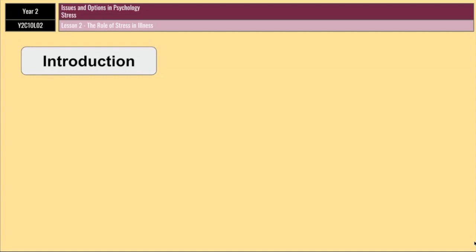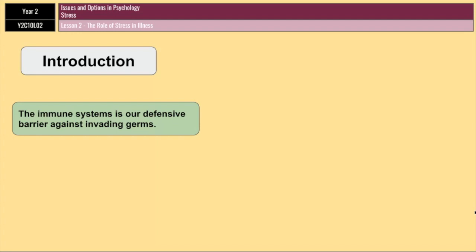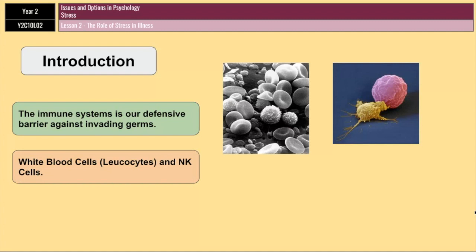One line of defense that we have is innate — it's within us, we're born with it. These are things such as white blood cells and natural killer cells. You've got white blood cells in the picture on the left and natural killer cells on the right. The natural killer cell is the yellow bit, and that is attacking an antigen.